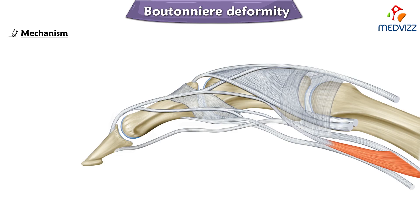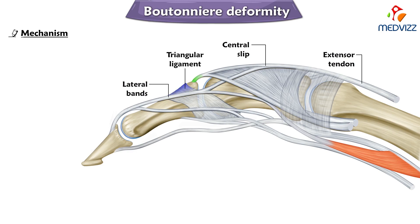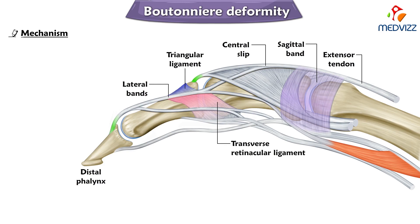In this image we can see the extensor tendon and the central slip very clearly, which is attached to the base of the middle phalanx. We can also appreciate the lateral bands connected by the triangular ligament, and the extensor tendon inserted at the base of the distal phalanx. Also visible are the sagittal band, transverse retinacular ligament, and the oblique retinacular ligament — all important structures to understand the mechanism of boutonnière deformity.